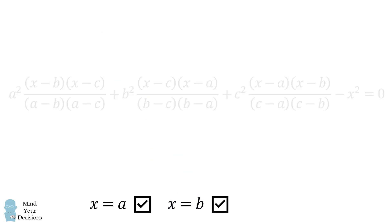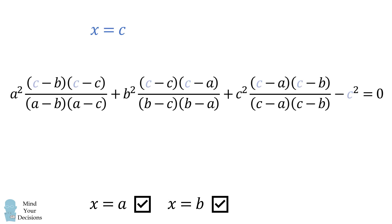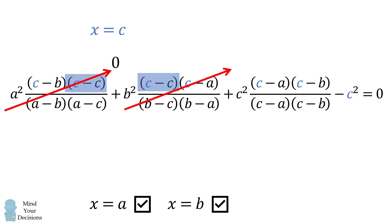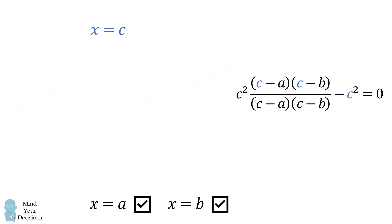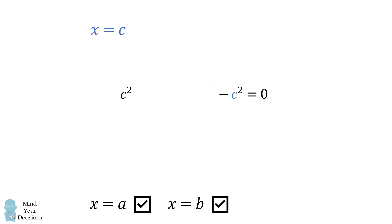Now we'll try one more value: x equals c. A very similar process applies. c minus c equals zero, so the entire first term vanishes. c minus c equals zero again, so the entire second term vanishes. In the third term, the numerator and denominator are exactly equal, so they cancel to one. We get c squared minus c squared equals zero — a true statement. Therefore x equals c is a solution to the original equation.